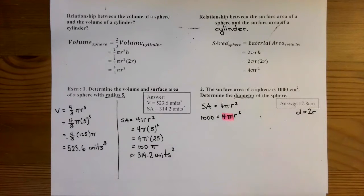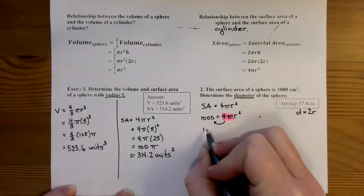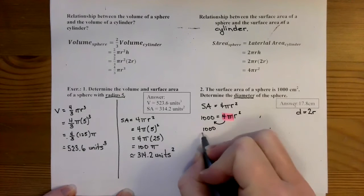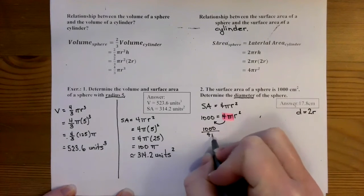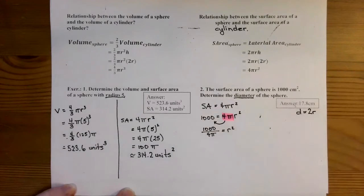So when I take it to the other side, it's going to be an opposite operation. So it's 4π times r², so it's going to be divided. So that's 1,000 divided by 4π is equal to r².